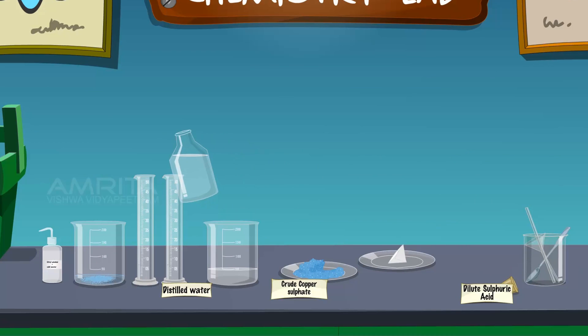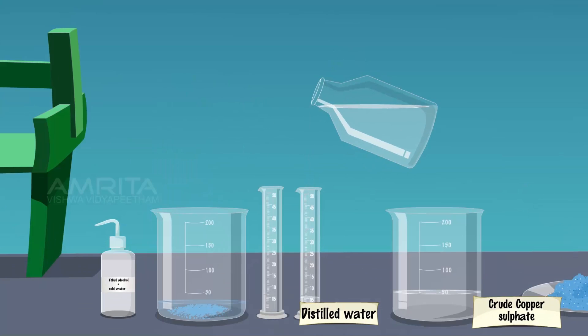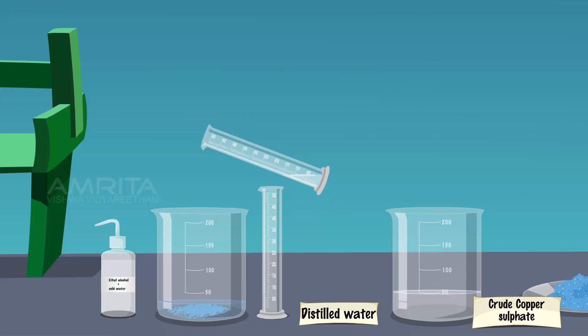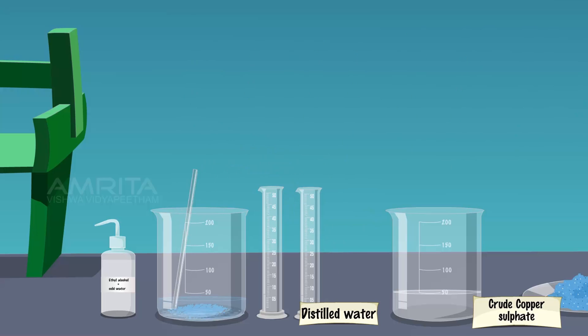Take 5 ml of dilute sulphuric acid in another measuring cylinder and add it into the beaker containing saturated solution of copper sulphate. Stir the solution with the glass rod. Observe that the solution of copper sulphate becomes transparent by the addition of sulphuric acid, thereby preventing the hydrolysis of copper sulphate.